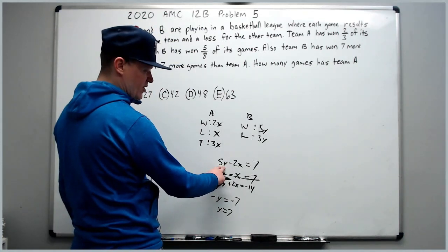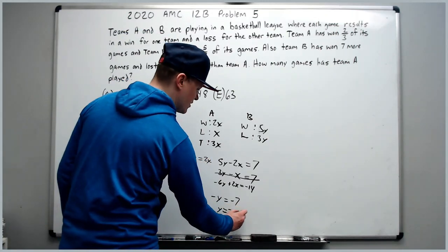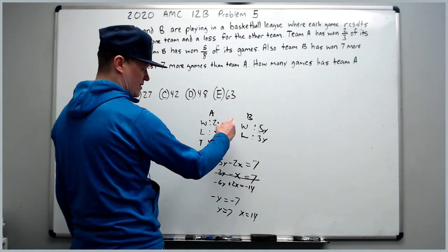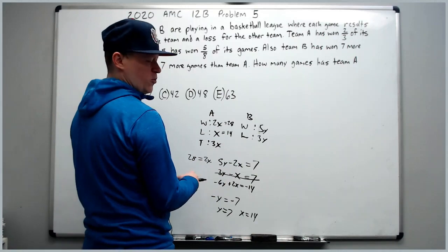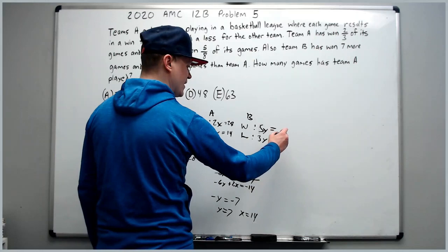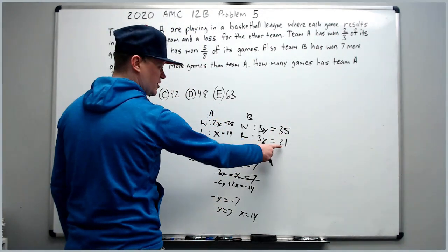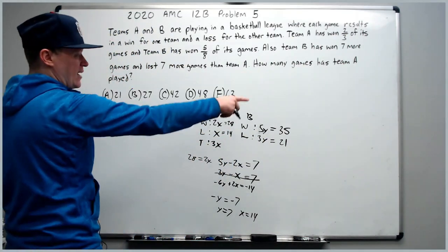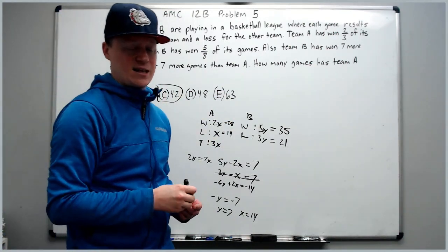You can plug it in to get 35. Subtract 7 to get 28. Move the 2x over and you'll see that x equals 14. So now we can check. 2x is 28, losses is 14. We're doing a check because you don't want to make silly mistakes. So 5y is 35 and 3y is 21. Now 21 minus 14 is 7, and 35 minus 28 is 7. How many games has team A played? 42 is the total. Answer C.